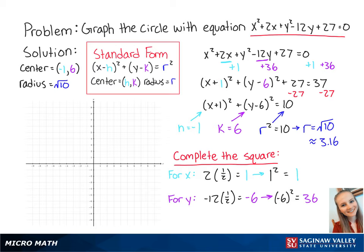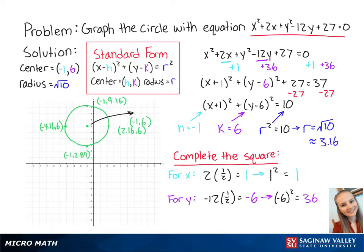Now we can graph the points of the circle. The center is at negative 1, 6, and since the radius is about 3.16, our outside points are at about negative 1, 9.16; 2.16, 6; negative 1, 2.84; and negative 4.16, 6. Connecting the points, we get the graph of the circle, and this is the final answer.